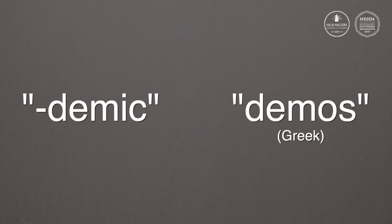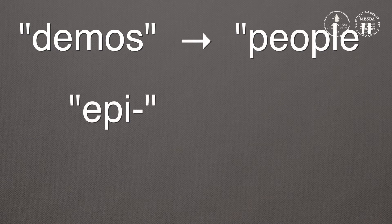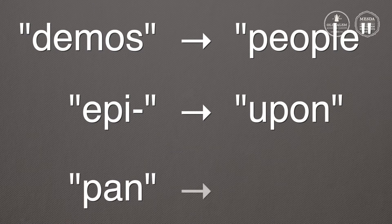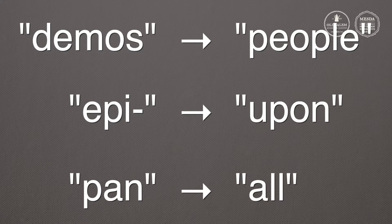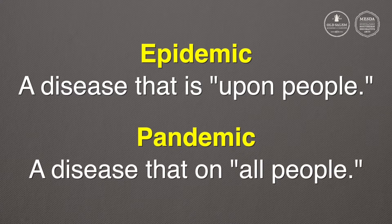Demic comes from the Greek word demos, which means people. Epi, as in epidemic, means upon. And pan, as in pandemic, means all. So an epidemic describes a disease that is upon people, and a pandemic describes a disease that is on all people.